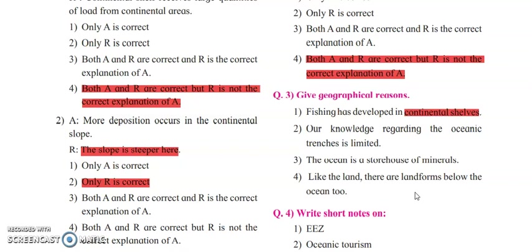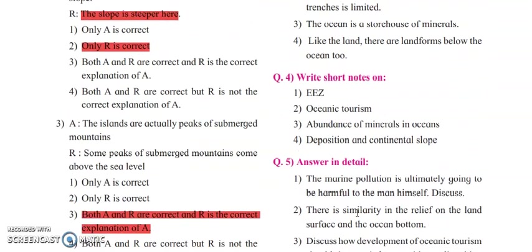Next: like the land, there are landforms below the ocean too. Continental shelf is a place which is a continual part of the coastal area or beaches. There are so many landforms which we see on the ocean floor — abyssal plain, oceanic trench, submerged mountains, and mid-oceanic ridge — all these are different landforms seen under the ocean.